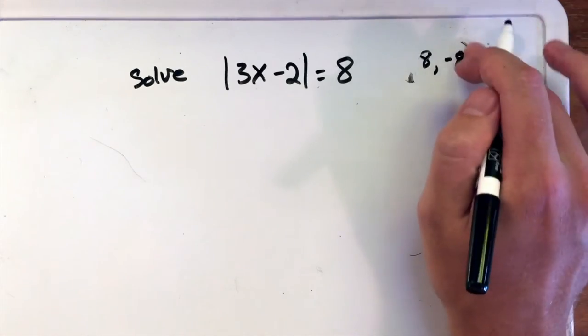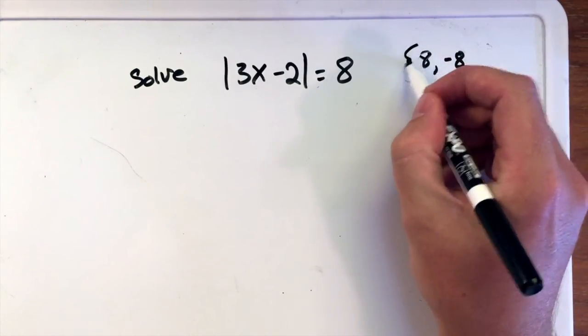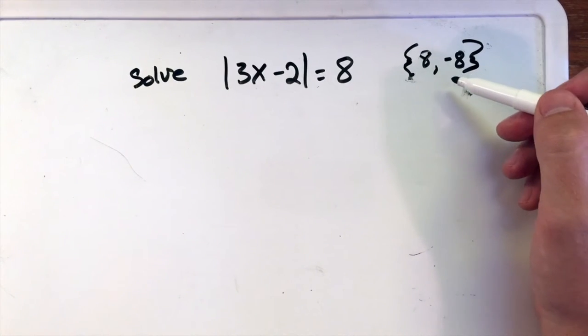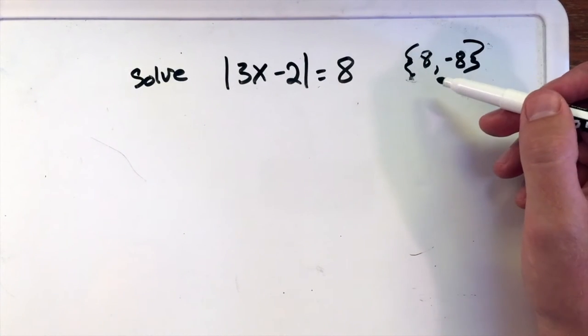Those are our two numbers here, and I'll just come into the set. These two numbers have a distance of—I'm sorry, distance of 8 from 0.